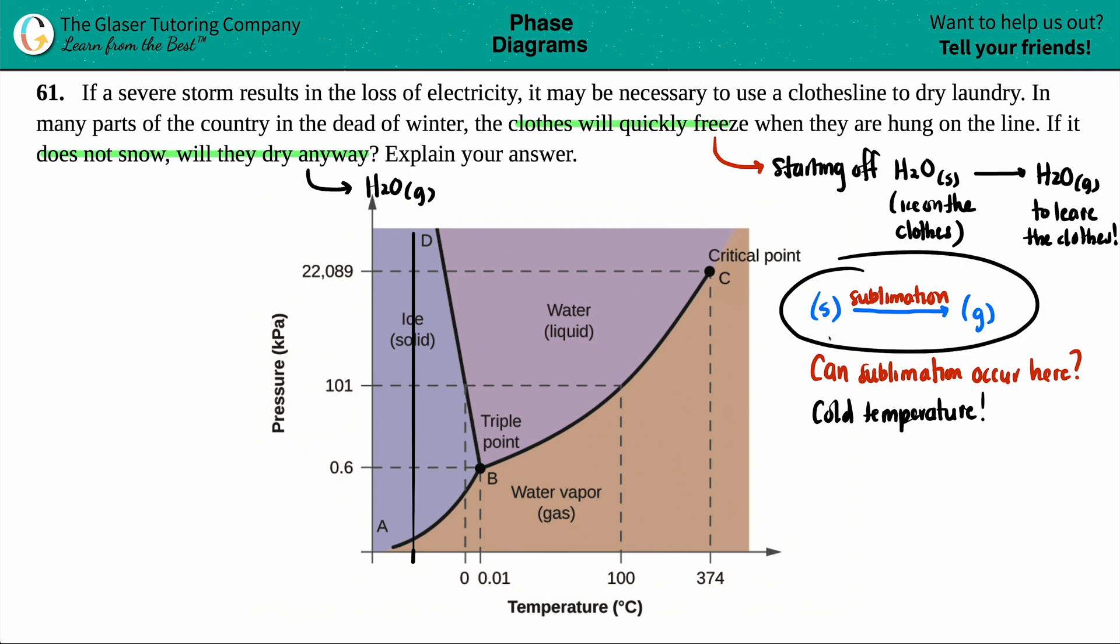Remember, sublimation is a solid to a gas. So the dark blue areas is ice, aka H2O is a solid. And the brown area is water vapor, which is a gas. Is there a way at this temperature in which you can cross over from a solid to a gas? Yes, you can. It's down here.